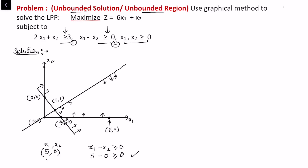The common feasible region satisfying all constraints is identified, but we see that this region is open from one side — it is not bounded. Hence we cannot directly say the optimal solution exists at a corner point, since that conclusion holds only when the region is bounded. Here, x1 and x2 are increasing indefinitely.